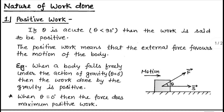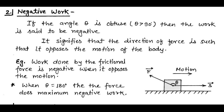There are three types of work done. First is positive work done: if the angle between the force and the displacement is acute, or less than 90 degrees, the work is said to be positive. Positive work means the external force helps the motion of the body and acts along the direction of displacement. For example, when a body falls freely under gravity, the work done by gravity is positive because the displacement and gravitational force act in the same direction — theta equals zero degrees.